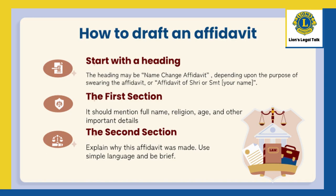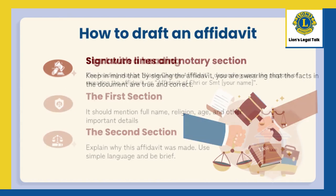The first section should mention the full name, father's name, religion, age, profession, Aadhaar number, occupation, and residential address of the person on whose behalf the affidavit is filed. The second section should explain in simple words why this affidavit is made. Each paragraph should be numbered, and usually each contains only one fact.